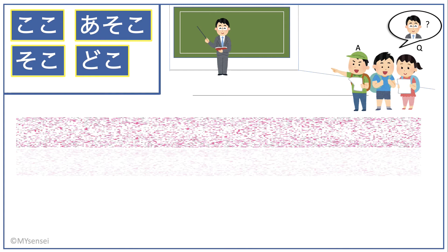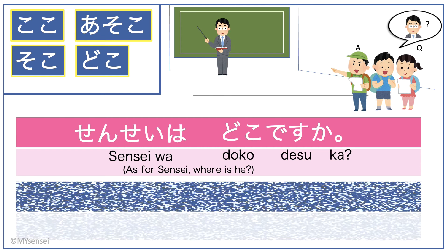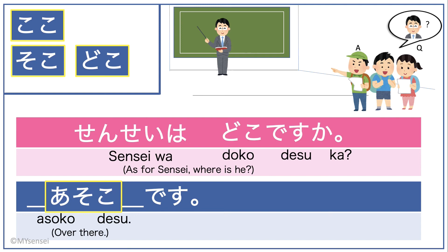The kids are looking for their sensei. The girl would ask, 'Sensei wa doko desu ka?' The boy's answer would be, 'Asoko desu,' because the teacher is away from all of them.